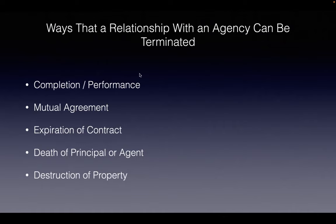The agency relationship can be terminated through: completion or performance — I helped them buy or sell the property; mutual agreement — neither party wants to work together anymore; expiration of contract — all contracts have a definite start and end date; death of the client, principal, or broker; or destruction of the property — if I represent a listing and the house burns down, the relationship ends as well.